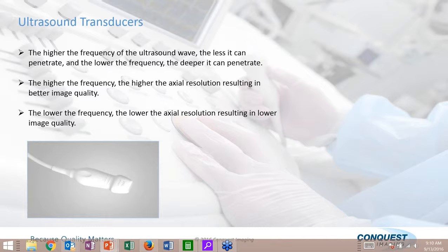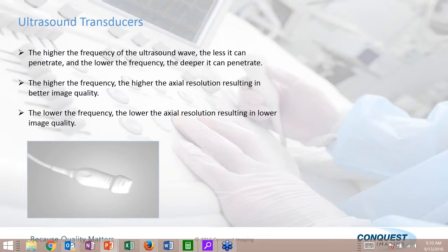With an ultrasound transducer, the higher the frequency of the ultrasound wave, the less the transducer can penetrate. The lower the frequency, the deeper it can penetrate. With a high frequency transducer, we can only penetrate a few centimeters into the body; with the lowest frequency transducer, we can penetrate up to 24 centimeters. The other side of that equation is the higher the frequency, the higher the resolution we get. Conversely, the lower the frequency, the lower the resolution. When performing an ultrasound exam, we always want to use the highest possible frequency to get the diagnostic quality we're looking for.